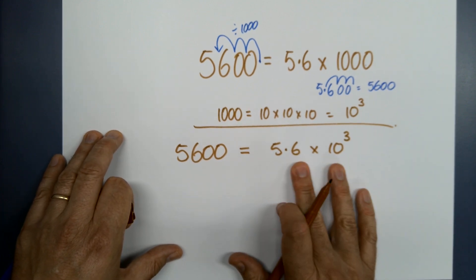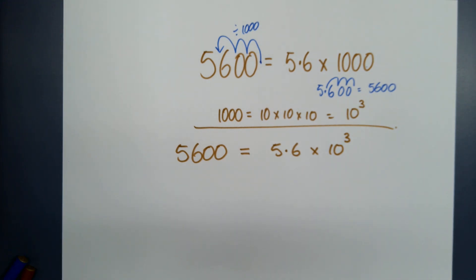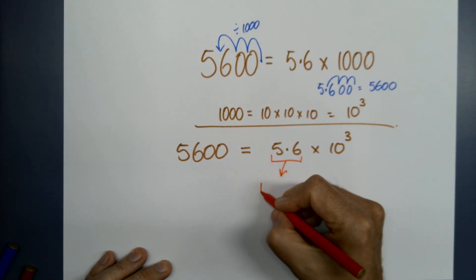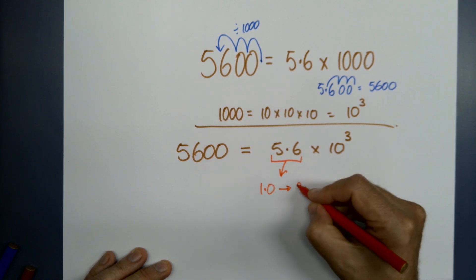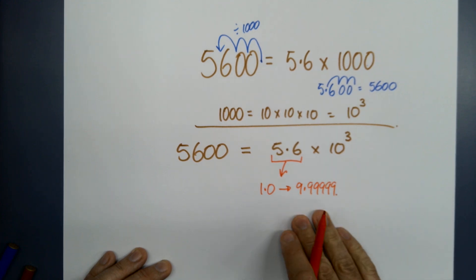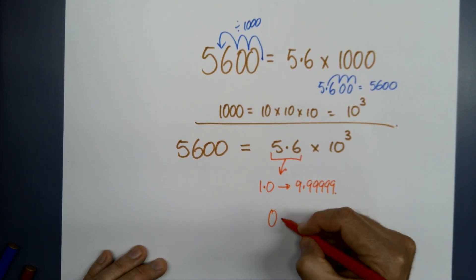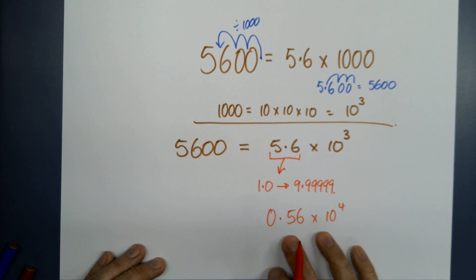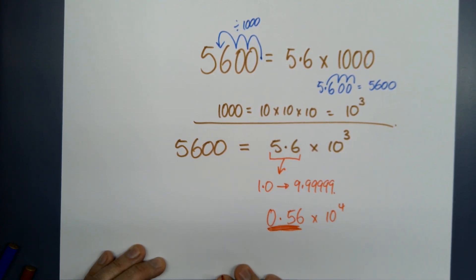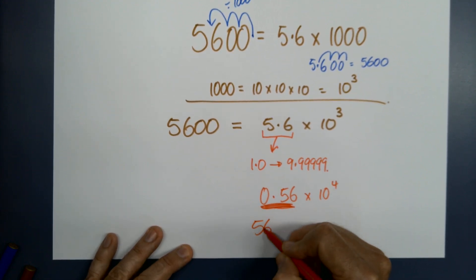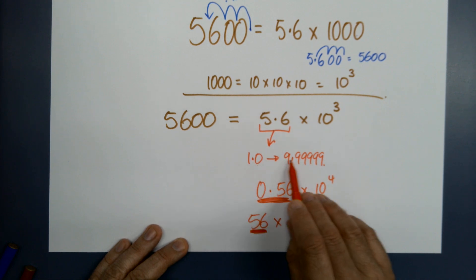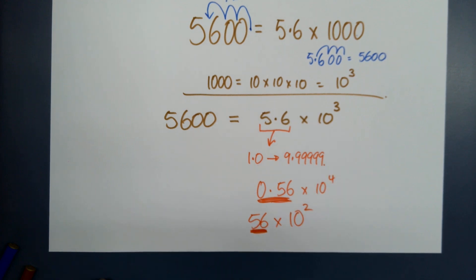Here are the rules: the number at the start has to be between 1.0 and 9.9999. It can't be outside that range — so anything where that first number is wrong is not scientific notation. That first number has to be between 1.0 and 9.9999.